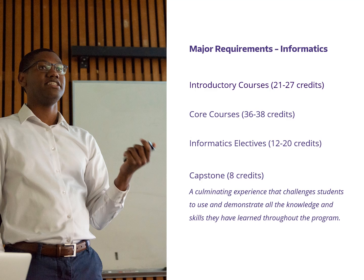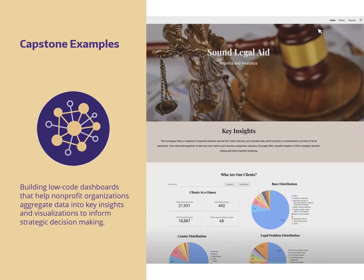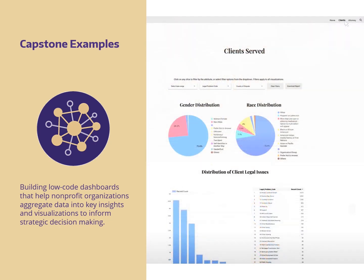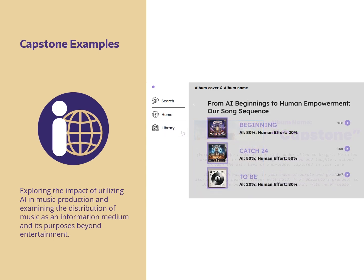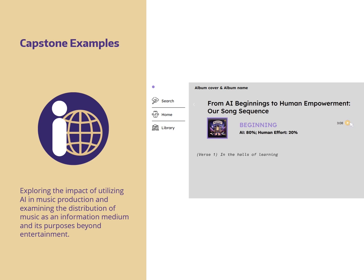And finally, their capstone. The Informatics Capstone is a culminating experience that challenges students to use and demonstrate all the knowledge and skills they have learned throughout the program. Here are a couple of examples of capstone projects that students have completed: building low-code dashboards that help nonprofit organizations aggregate data into key insights and visualizations to inform strategic decision-making; and exploring the impacts of utilizing AI in music production and examining the distribution of music as an information medium and its purposes beyond entertainment.